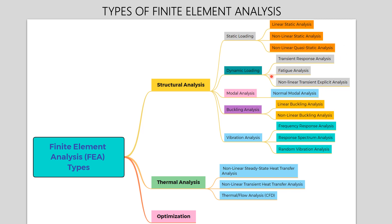In dynamic loading, it is further divided into three types: transient response analysis, fatigue analysis, and non-linear transient explicit analysis. In transient response analysis, we apply dynamic loading conditions with respect to linear material properties to see structural behavior. In fatigue analysis, the structure fails due to repetitive cyclic loadings. In non-linear transient explicit analysis, we consider non-linear material properties with respect to changing dynamic loading conditions.